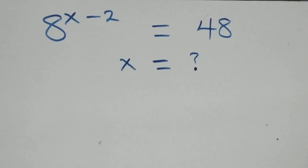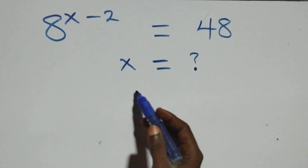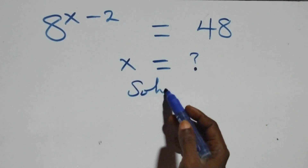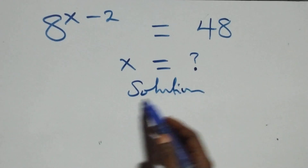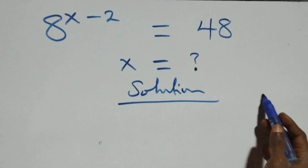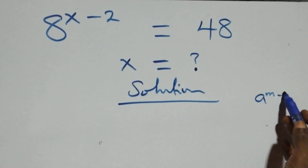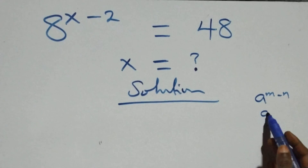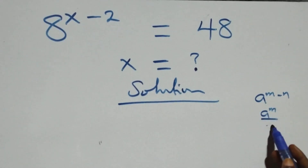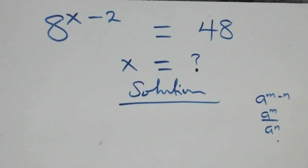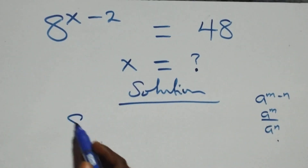Hello, you're welcome. How to solve this nice exponential equation. This follows from the law: a raised to power n minus n is the same thing as a raised to power n over a raised to power n.